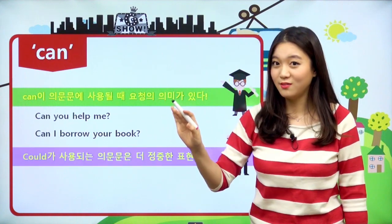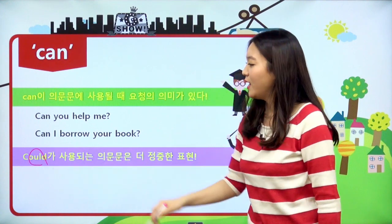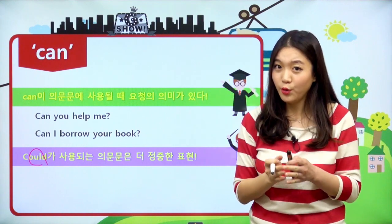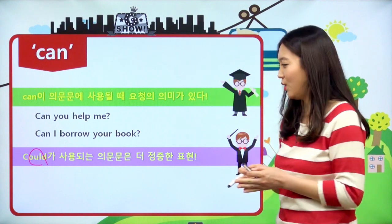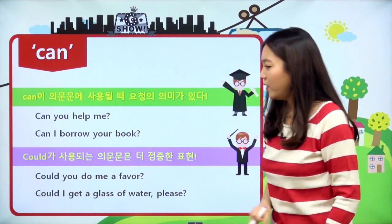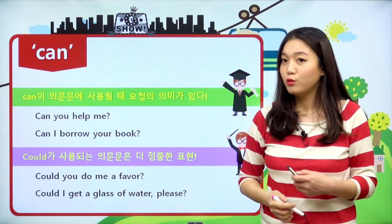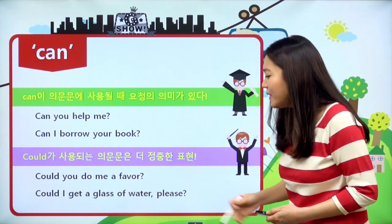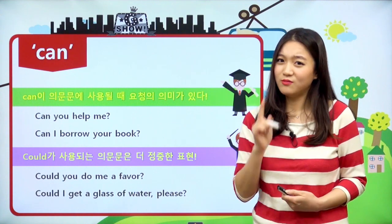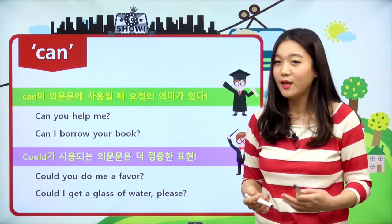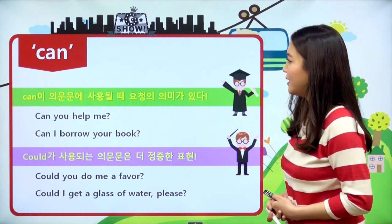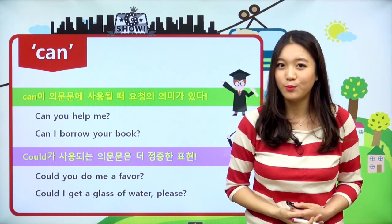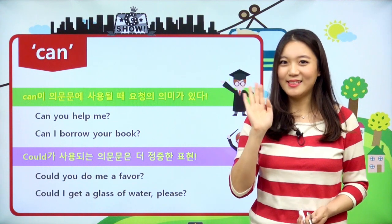그런데 can의 과거형이 뭐였죠? could였죠. 그래서 could로 이 can을 바꾸어 사용할 수 있는데, could가 사용될 때는 좀 더 정중한 표현이에요. 예를 들면 Could you do me a favor? 하면 '내 요청을 좀 들어줄 수 있겠어요?'라고 조금 더 공손하게 표현을 하는 것이고요. Could I get a glass of water, please? 하면 조금 더 정중하게 '제가 물 한 잔만 마셔도 될까요?'라고 공손하게 물어보는 표현이다. 오늘 can에 대해서 살펴보았는데 우리 친구들도 오늘 배운 거 꼭 다시 한번 보시고요. 우리는 다음 시간에 다시 만나요. See you next time. Bye-bye.